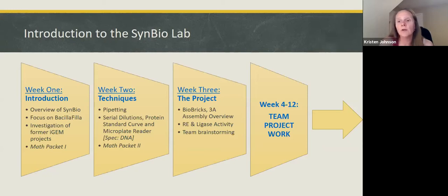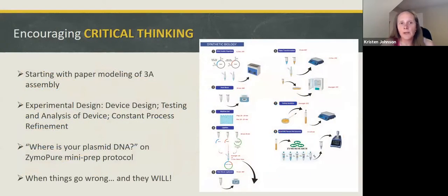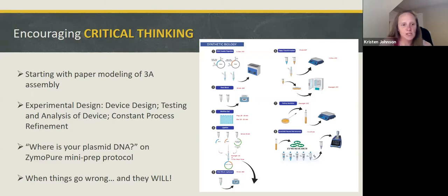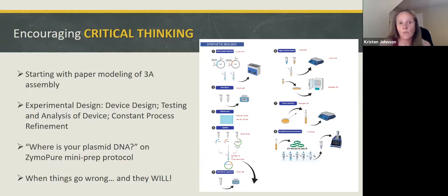Then we spend weeks four through twelve doing team project work. One of the ways I encourage critical thinking is starting with that paper modeling of 3A assembly — I really let the students struggle with it, working individually and then in small teams, using those scissors and tape to put things together. My TA walks around encouraging them to try again. This really starts the semester well, having students problem-solve and understand how they're going to have to figure things out on their own, and that answers are not going to be provided to them.